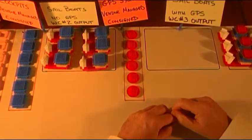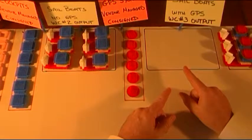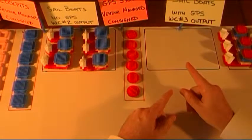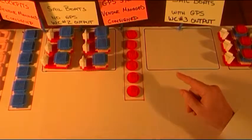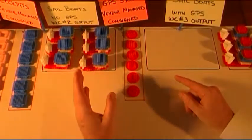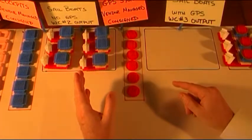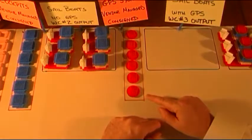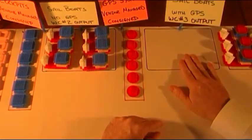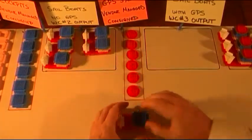Now work center number three has received a signal, a visual one, that says it's time for you to start producing. We need to take some SA3s from the output Kanban of work center number two, add some GPS systems and begin to fill our outgoing Kanban. Let's do that.